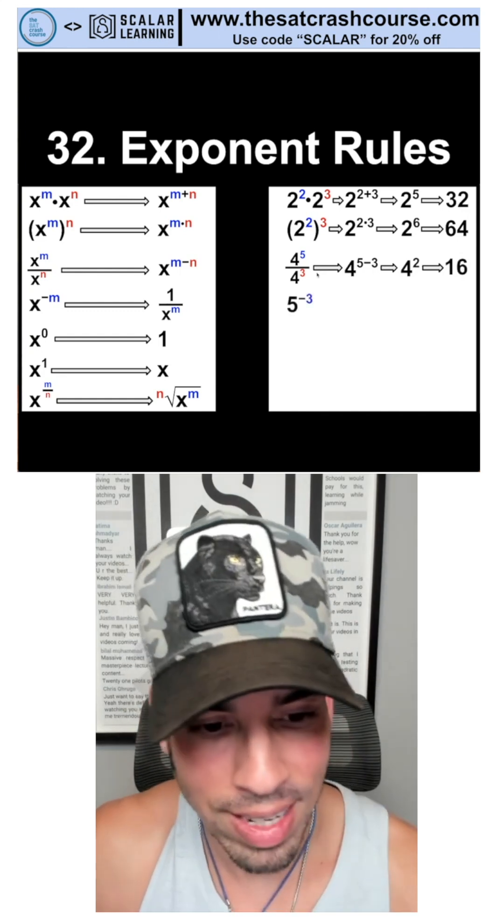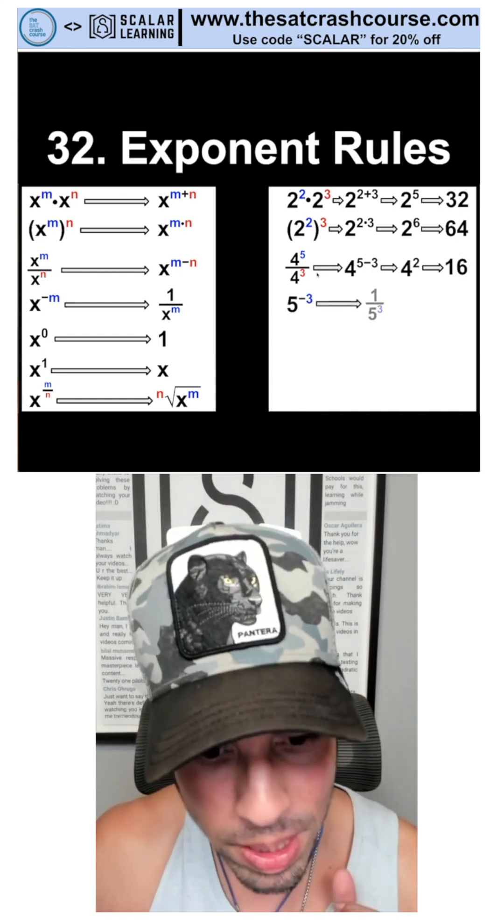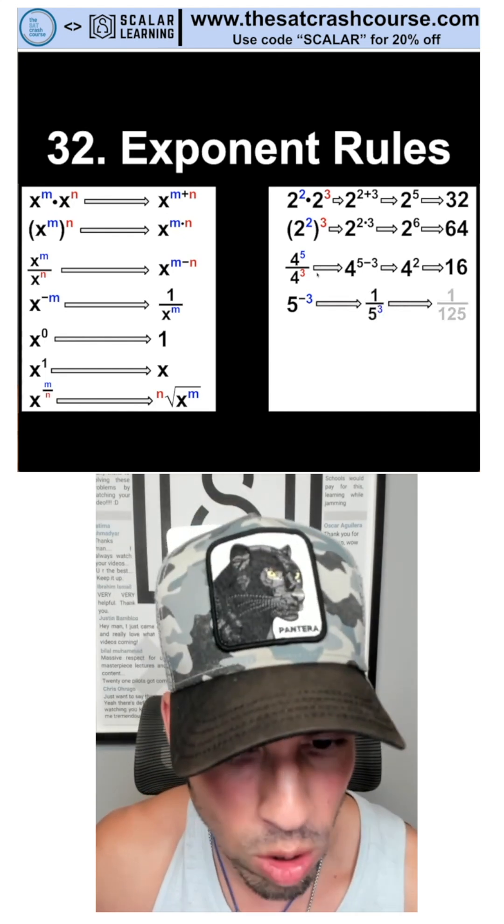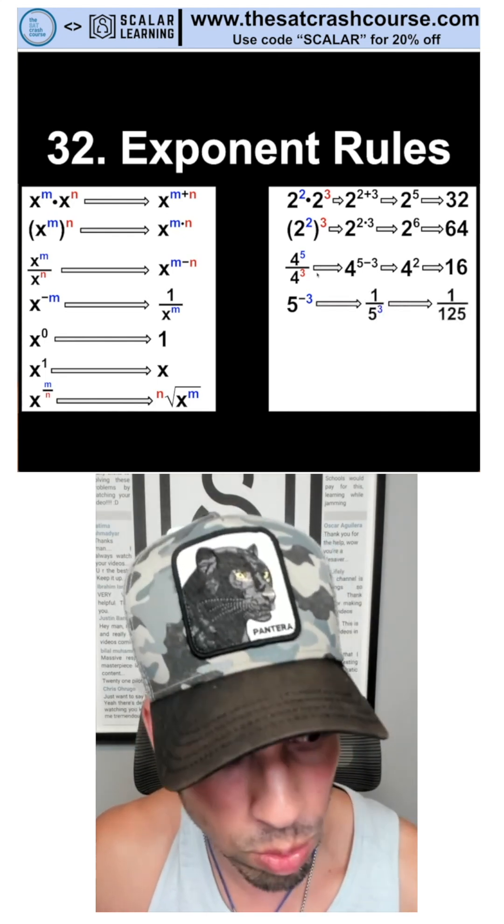Now we have five to the negative third. That simply means we're dropping it to the denominator, putting a one on the top. Five to the third power is 125, so it's one over 125.